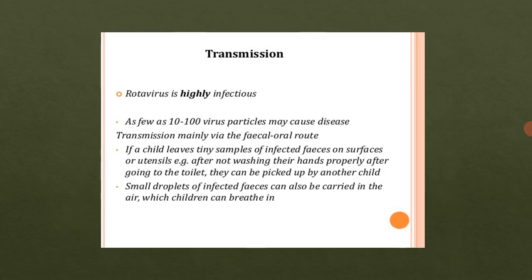Now we will see the transmission of rotavirus. Rotavirus is highly infectious and can spread easily. As few as 10 to 100 virus particles may cause disease. Transmission occurs mainly via the fecal-oral route — through hands-to-oral contact with unwashed hands contaminated with stool. Just 10 to 100 virus particles are sufficient to cause the infection.